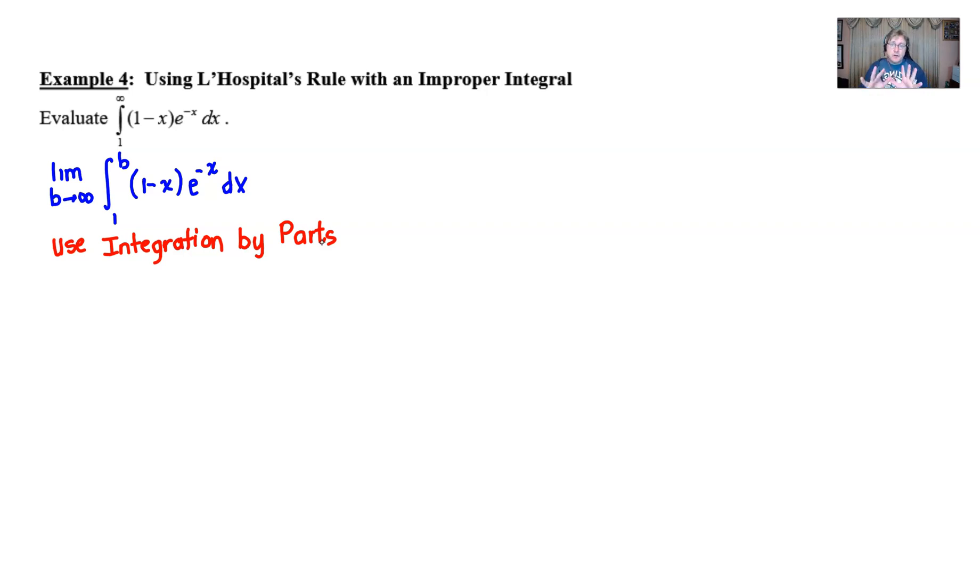Now, it's also very possible if you wanted to distribute the e to the negative x in. But that's not going to bypass the need to use integration by parts. Because you would still have this x and this e to the negative x being multiplied together. I'm going to go ahead and choose to leave these two separate.